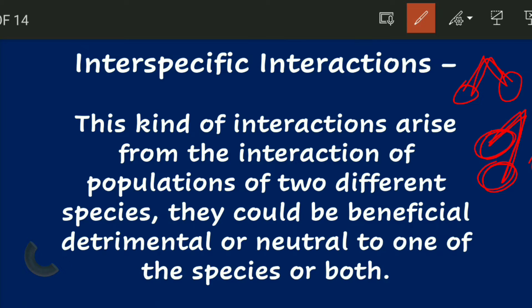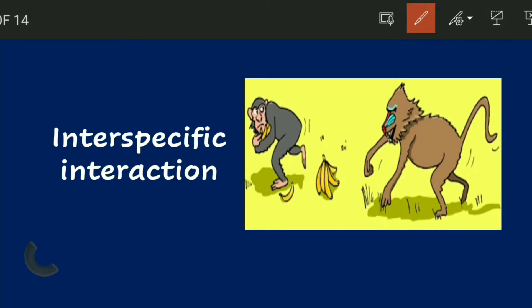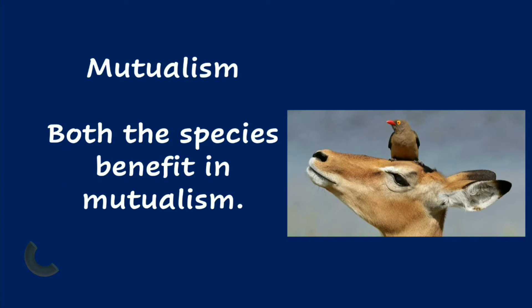So here we will see how two different species in a population interact — what we call inter-specific interactions. This can be beneficial, detrimental — meaning it can cause harm or death — or neutral, meaning neither benefited nor harmed. This can apply to both species or just one.